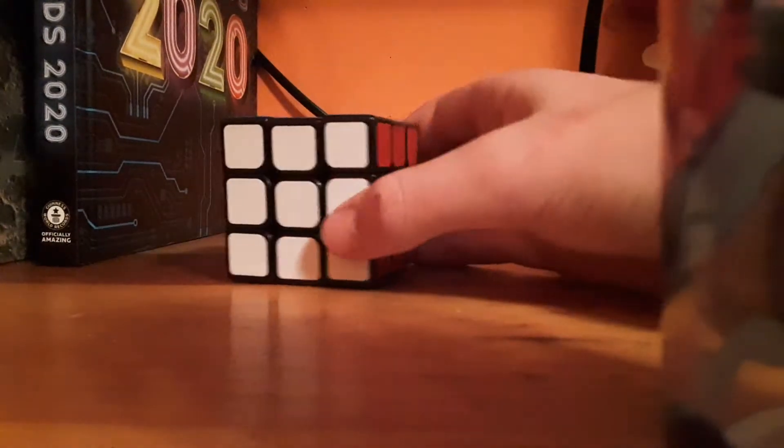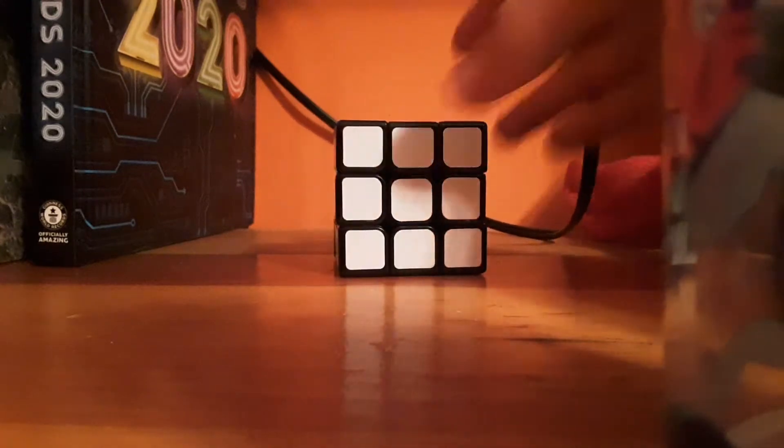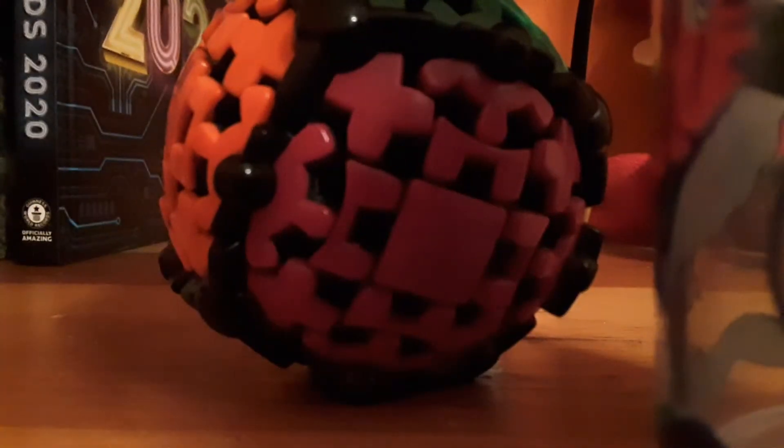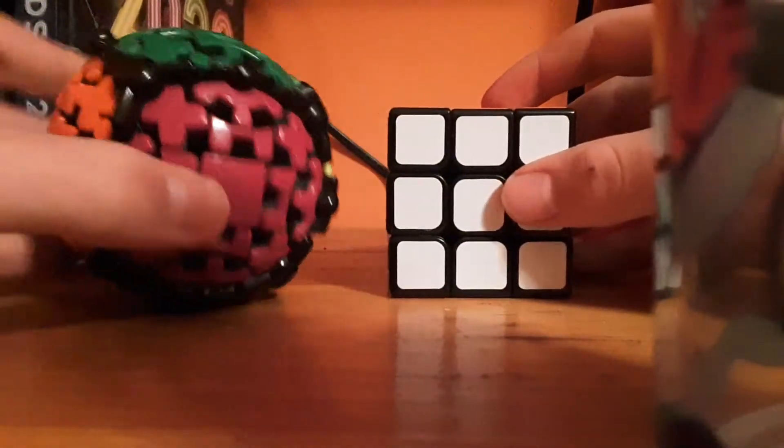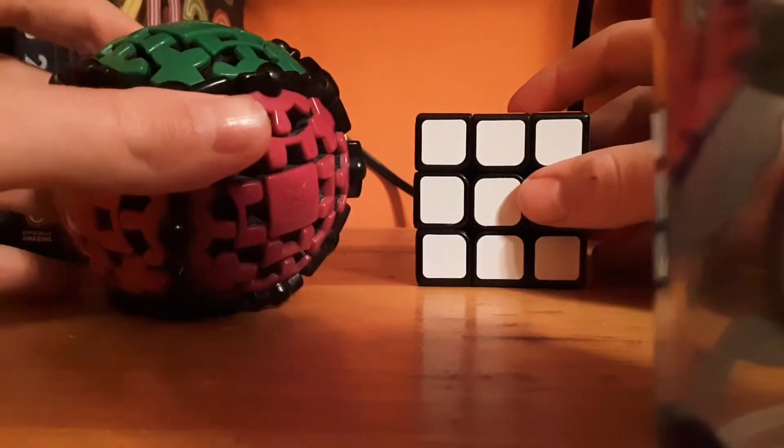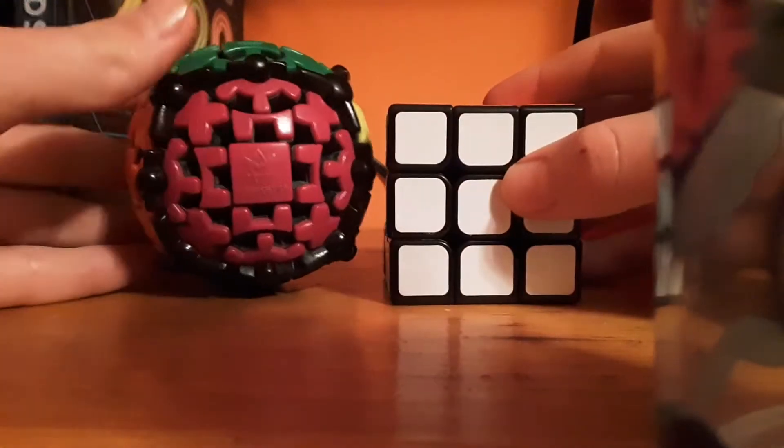So this is the 3x3. I just wanted to throw a cube, but that's not what we're actually talking about. I'm talking about this. This is the gear ball. It's a very strange cube. I'm gonna talk about it. And I threw the 3x3 because these cubes are pretty similar.